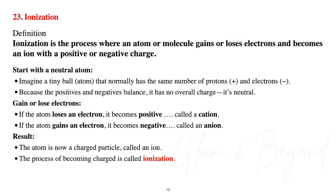Number twenty-three, ionization. Ionization is the process where an atom or molecule gains or loses electrons and becomes an ion with a positive or negative charge. Start with a neutral atom — one that has the same number of protons and electrons, so the positives and negatives balance, giving it no overall charge. If the atom loses an electron, it becomes positive, called a cation. If the atom gains an electron, it becomes negative, called an anion. The atom is now a charged particle called an ion — and the process of becoming charged is called ionization.